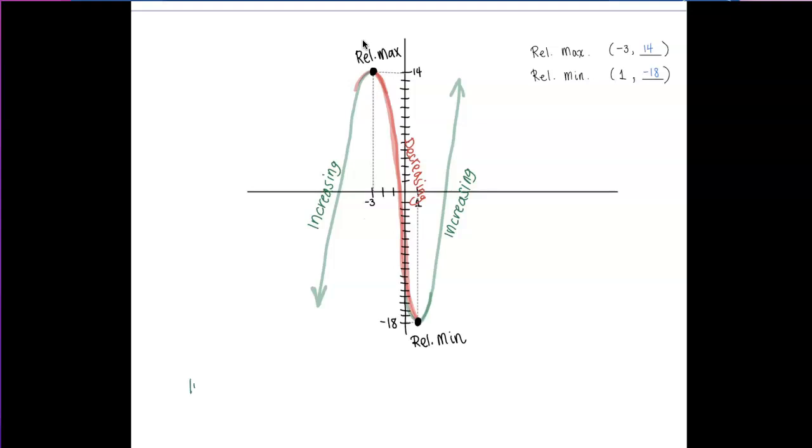Now, this graph is decreasing on negative 3 to positive 1. So, second derivative test, the way that we find increasing and decreasing is actually the opposite of the first derivative test, right?